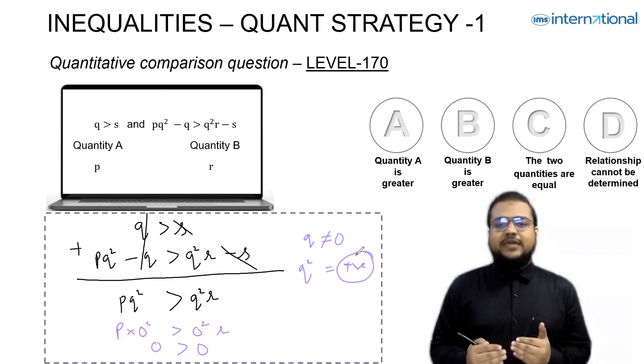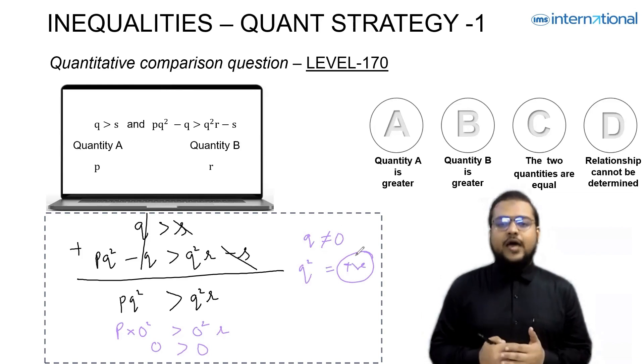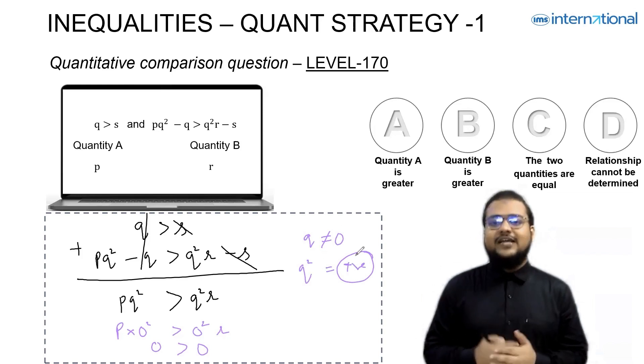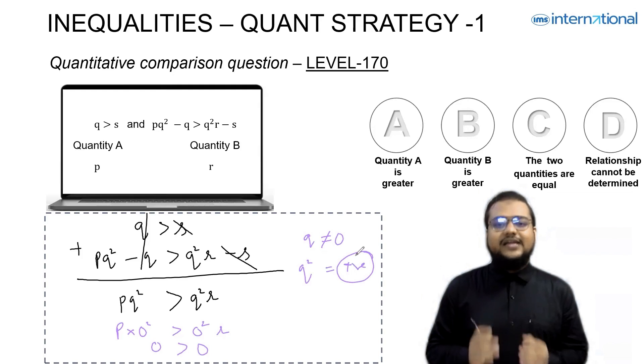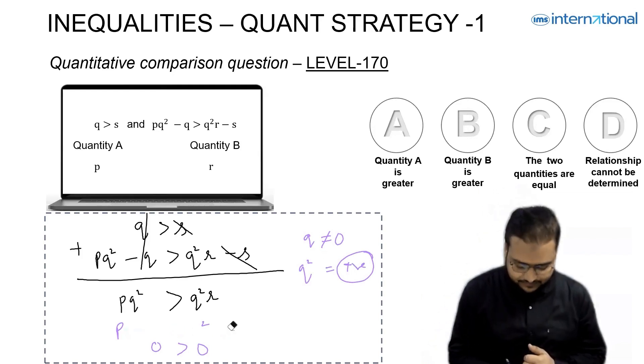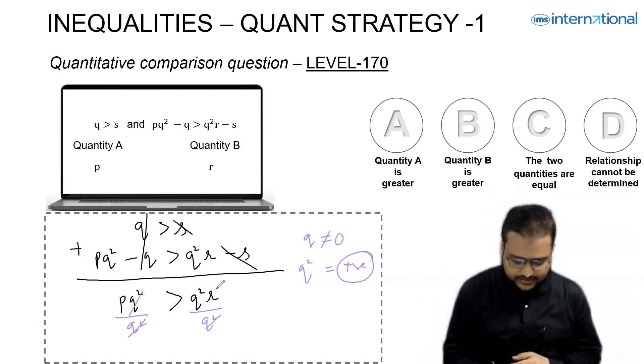That's it. This means if I decide to divide both sides by Q², that means I'm dividing by a positive constant. That means I can keep the inequality sign retained. Let's do that. Dividing both sides by Q², Q² and Q² cancel. Hence we have P greater than R.